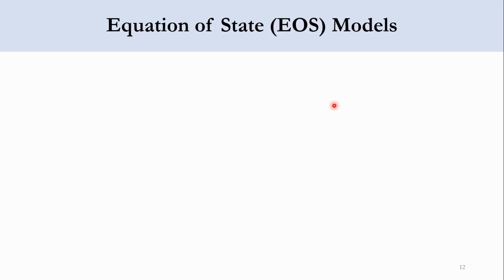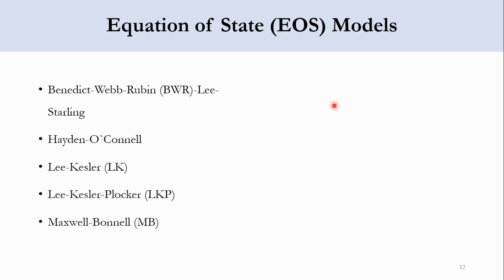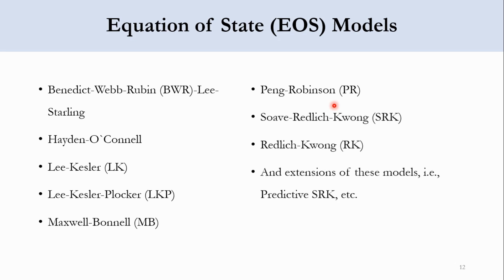Let's first recap the models we have classified. In the equation of state model we have BWR, Hedden O'Connell, Lee Kessler, Lee Kessler-Plocker (LKP), Maxwell Bonnell, Peng-Robinson, Schwab-Redlich-Kwong, Redlich-Kwong, and extensions of these models.